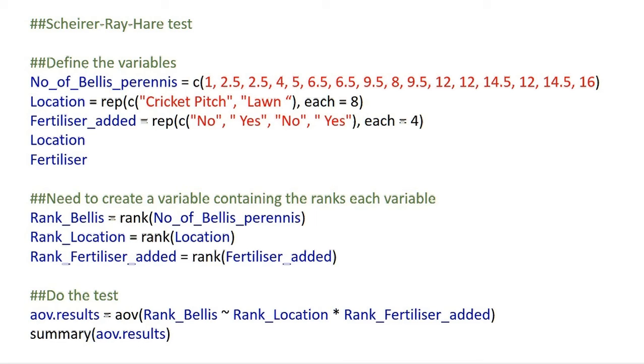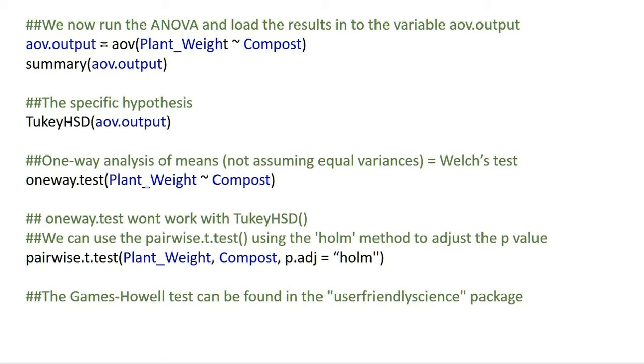In the second variable, we have used the rep function, which will create a variable with each category or factor name in quotes repeated the number of times specified by each attribute before the program appends the next factor name to the variable. Here is the second page of the script.